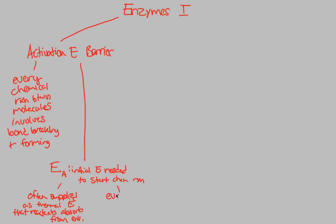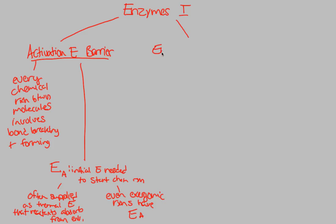So what do enzymes do? They are involved in the concept of activation energy. Enzymes help reactions by lowering the activation energy at which a normal chemical reaction takes place — speeding those reactions along. This is all about metabolism, which is the sum of all chemical reactions and energy transformations taking place in a system, and enzymes are part of every single biological system.